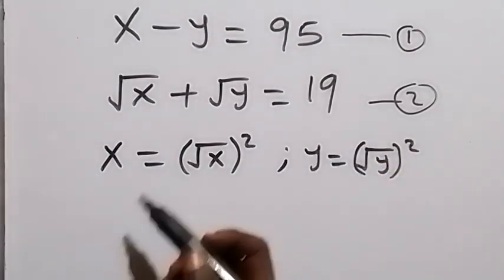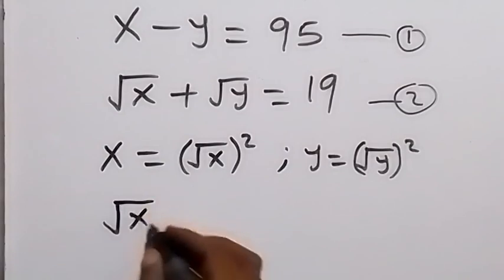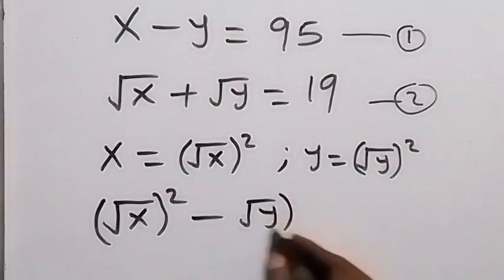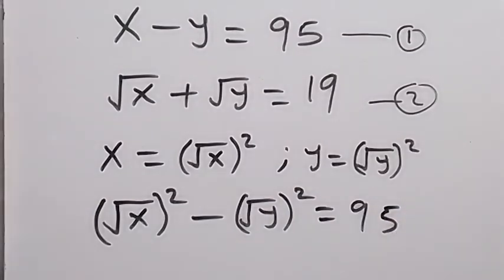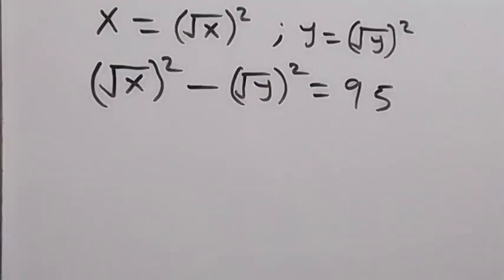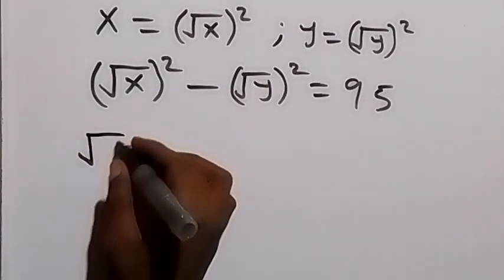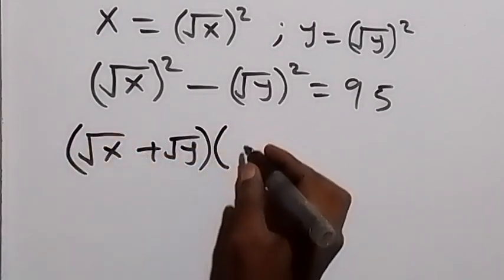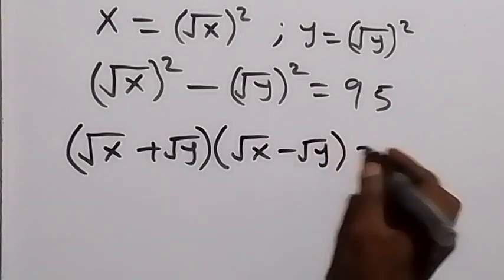So now, we can rewrite equation 1: x can be written as root x squared, then minus root y squared, equals to 95. And from there, we can write this another way — we have a difference of two squares here. So when we factor this, this will become root x plus root y, into bracket, root x minus root y, which is equal to 95.